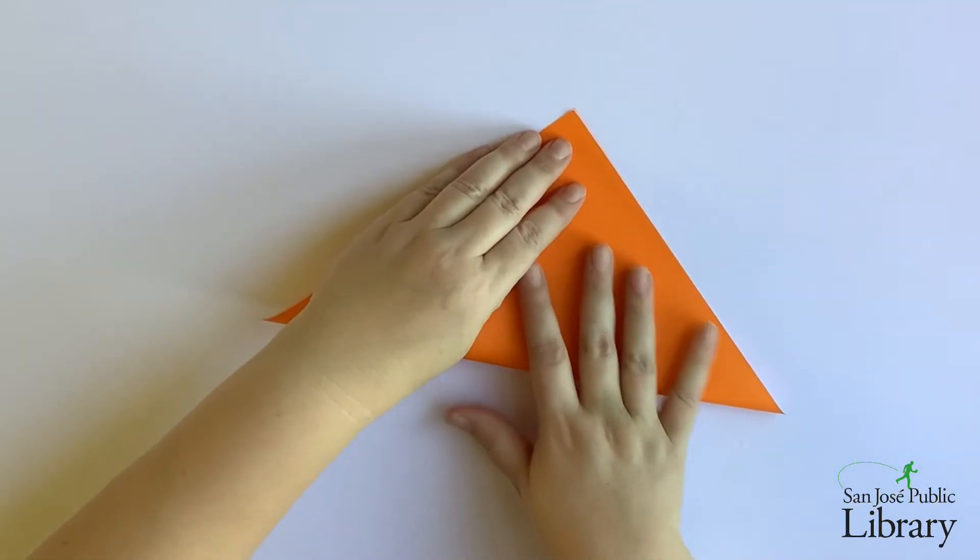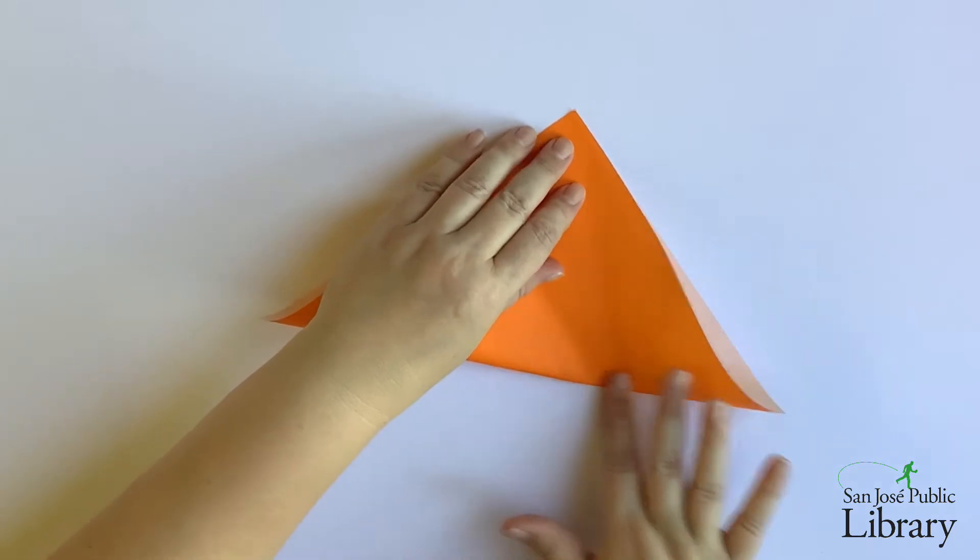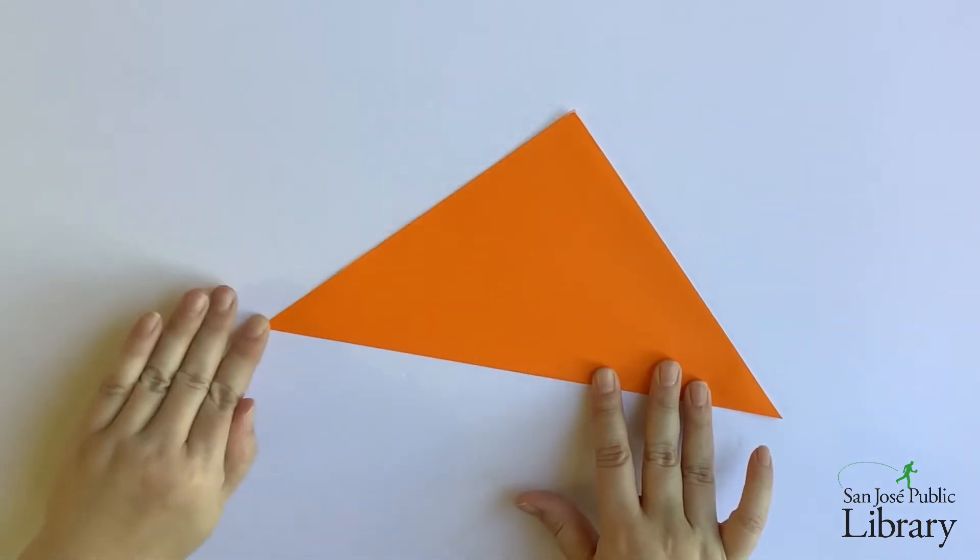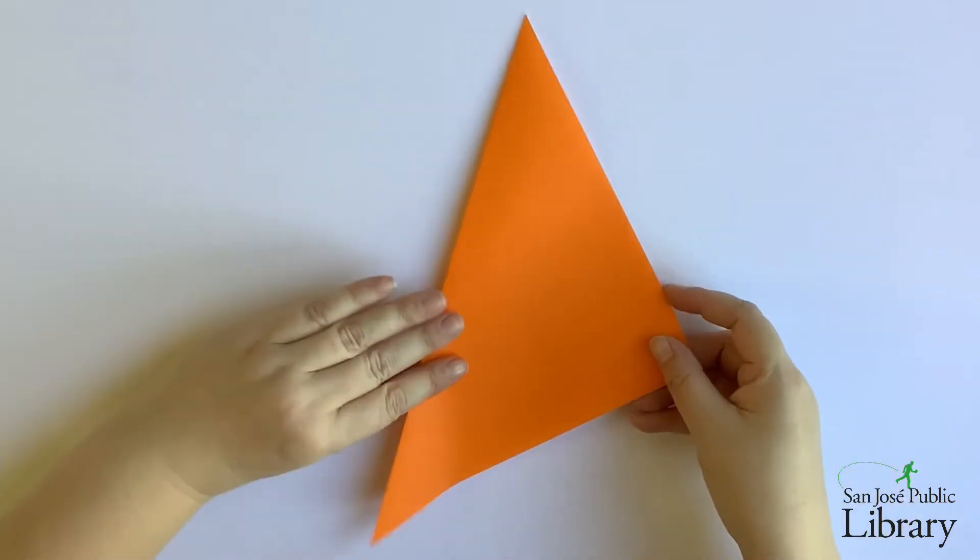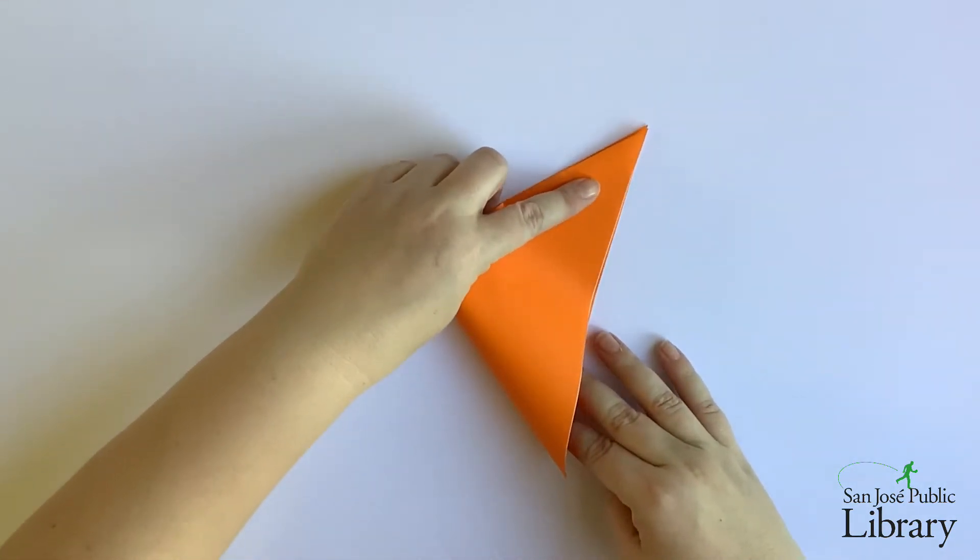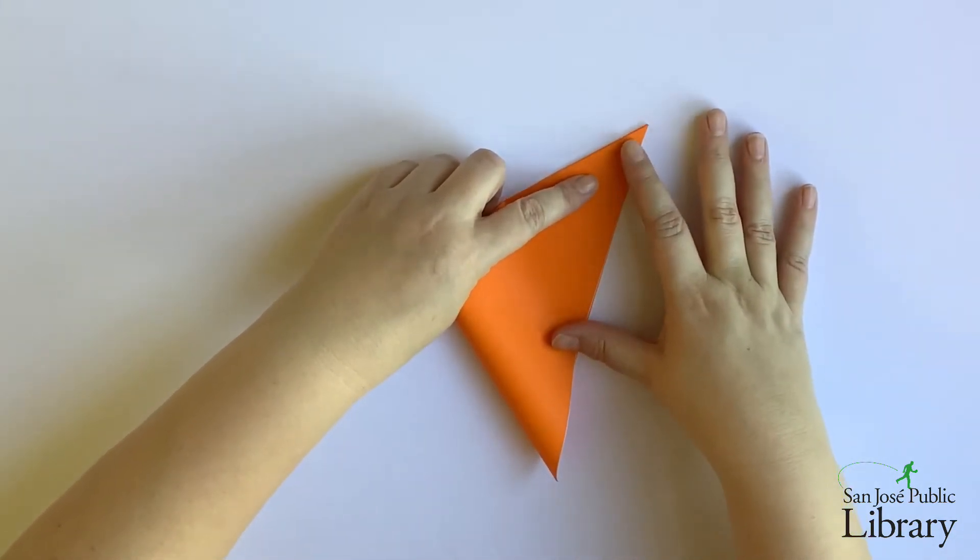We're going to begin with our square of paper bringing one corner to meet its opposite diagonally and making a fold. We'll then fold the triangle in half again so that now our square of paper is in quarters.